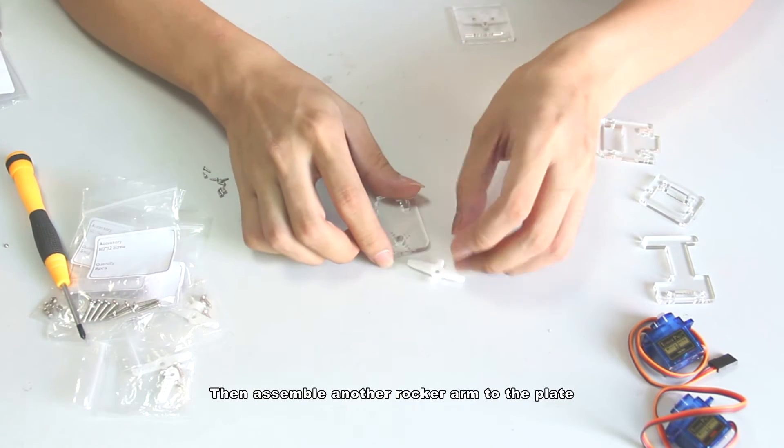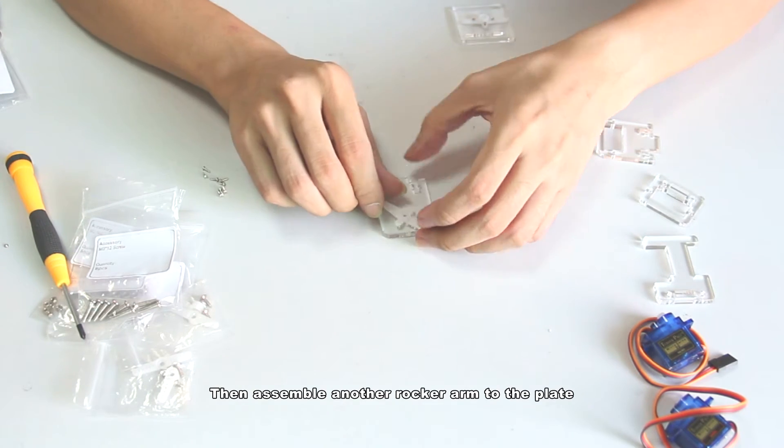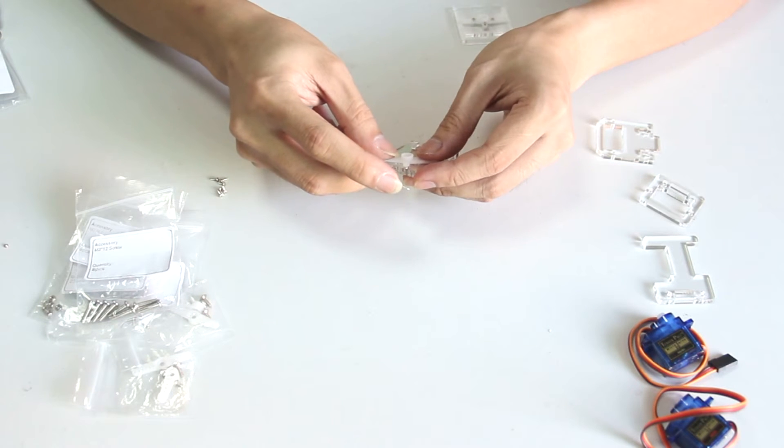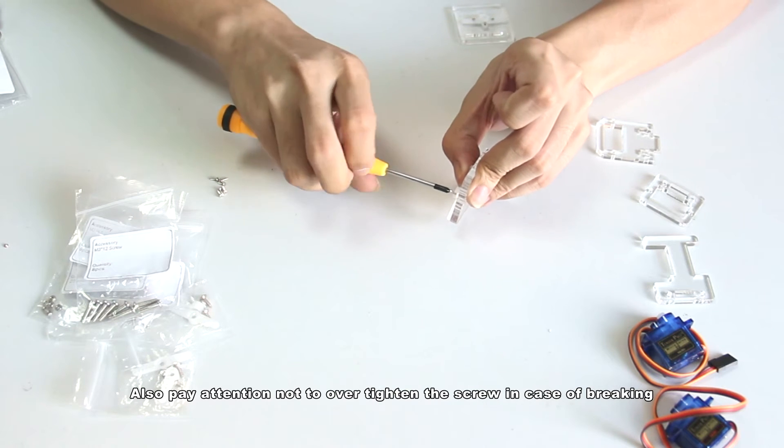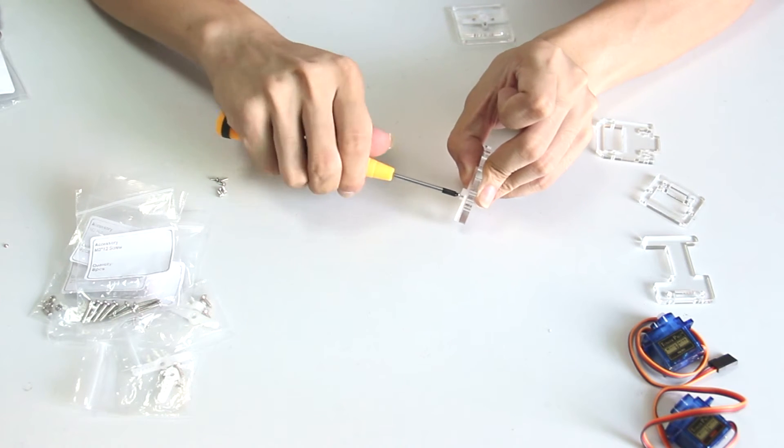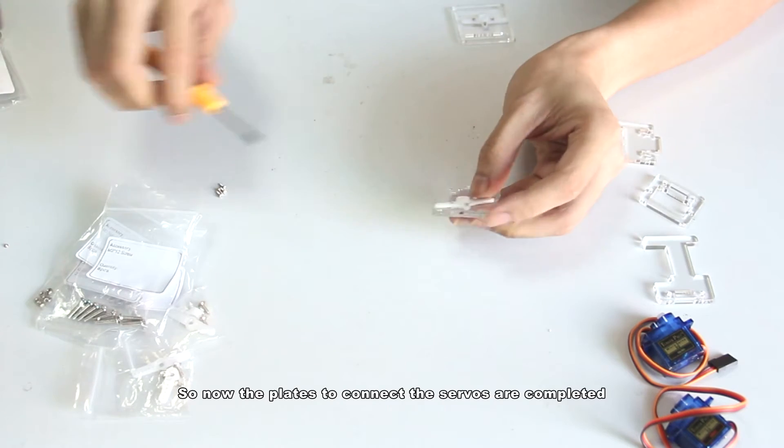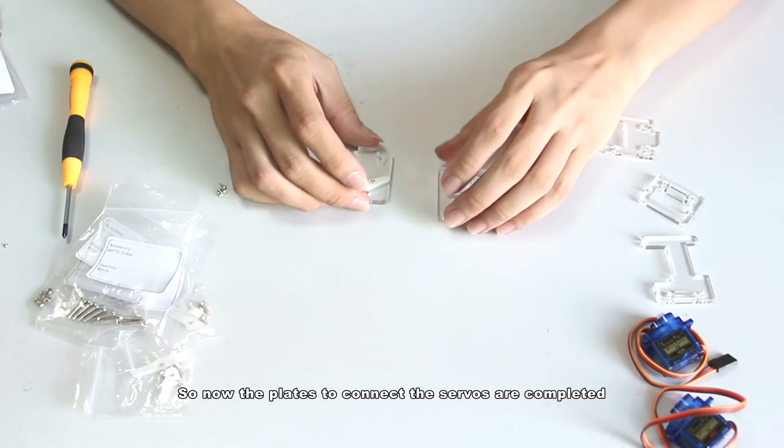Then assemble another rocker arm to the plate. Also pay attention not to over tighten the screw in case of breaking. So now the place to connect the servos are completed.